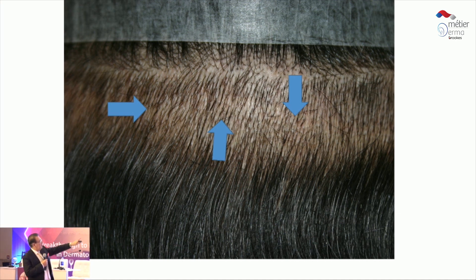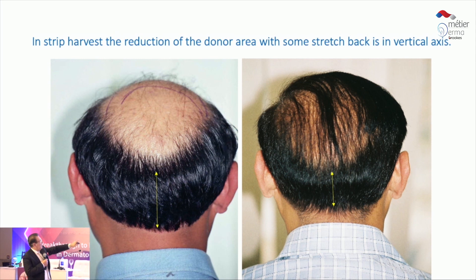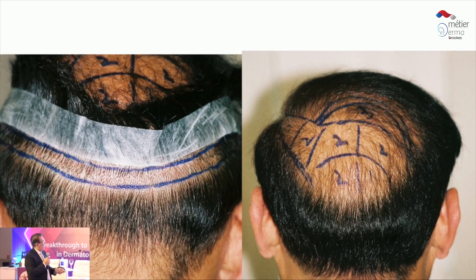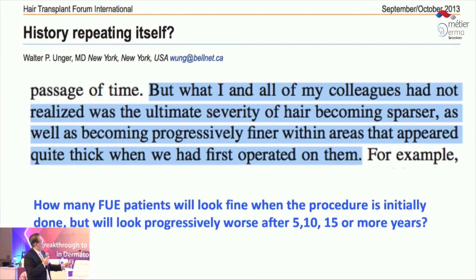In the strip method and FUE, the key difference is: with FUE you are reducing density, while with strip you are reducing width. You can see the width reduction in these patients. When you combine both methods, you get the next important consideration.